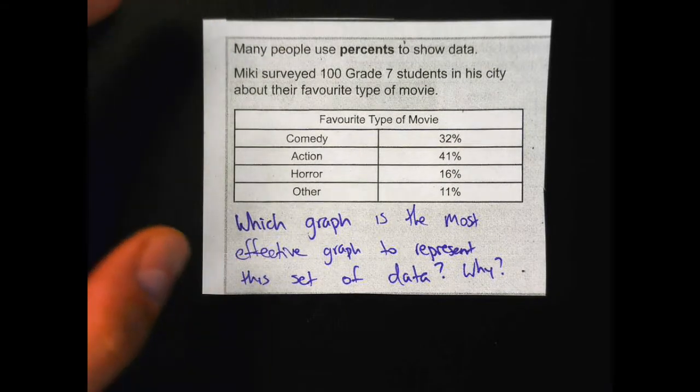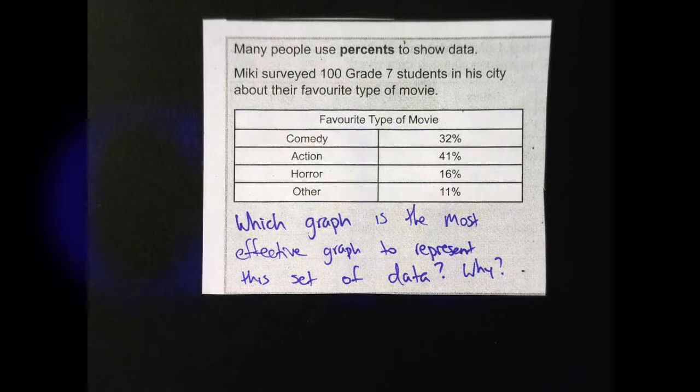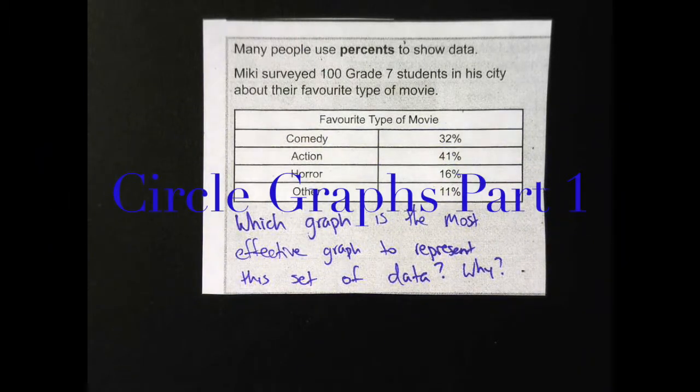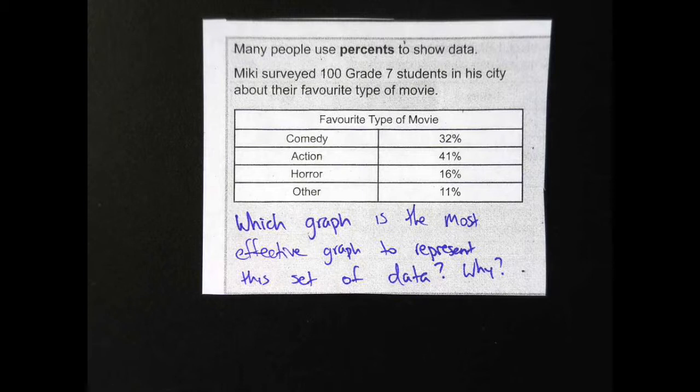So here's your question. Many people use percents to show data. Mickey surveyed 100 grade 7 students in his city about their favorite type of movie. Comedy 32%, action 41%, horror 16%, other 11%. Which graph is the most effective graph to represent this set of data and why?